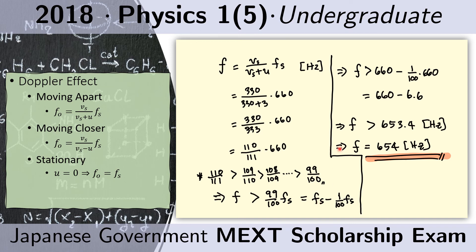F sub S here is 660. 1 over 100 times F sub S is 660 over 100, which is 6.6. I just had to compute this and 660 minus 6.6 is actually 653.4.